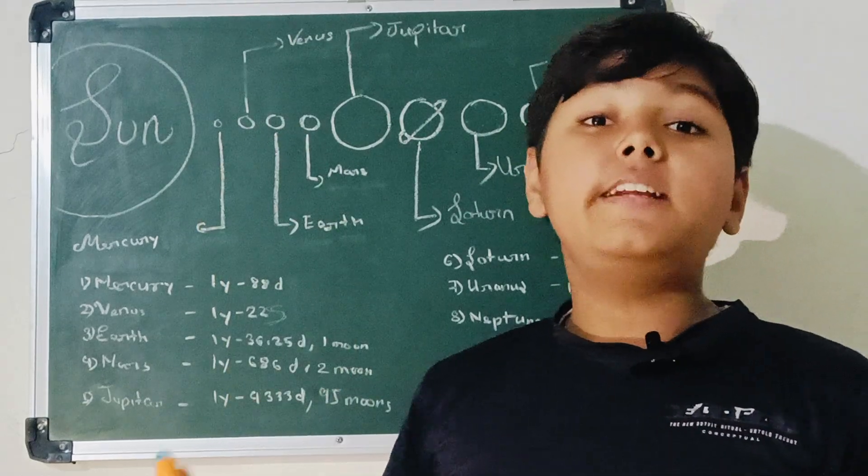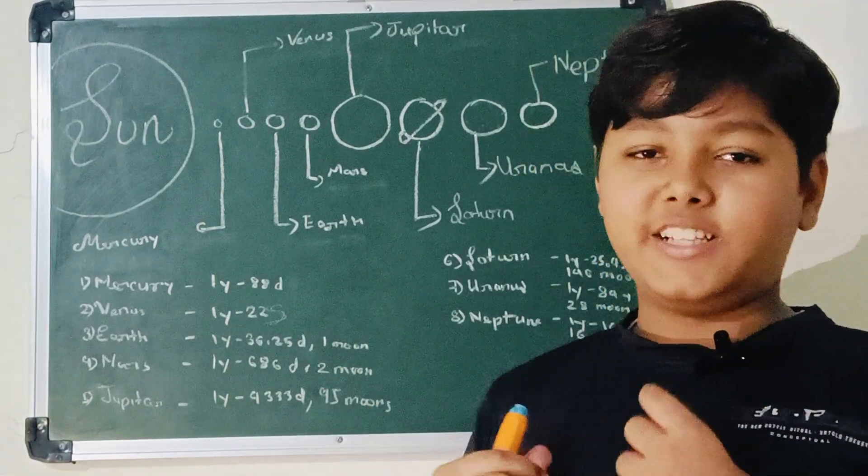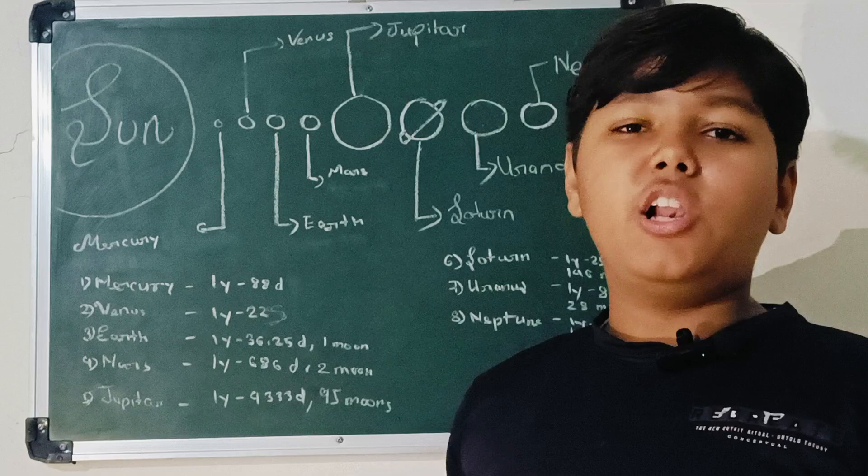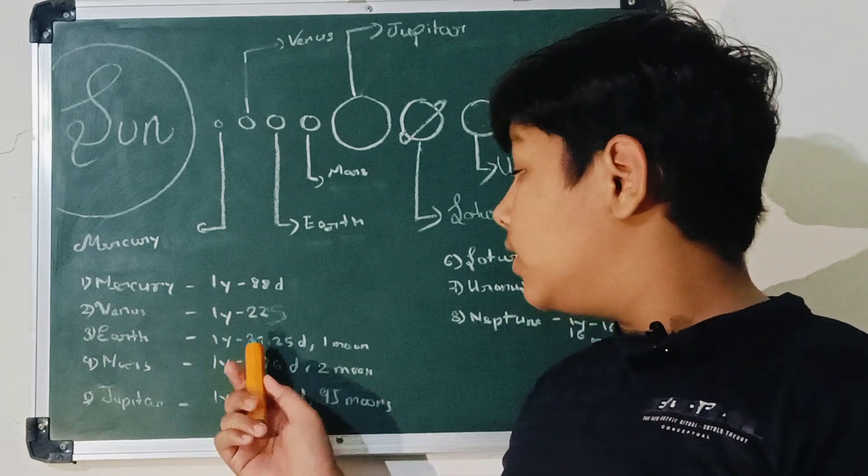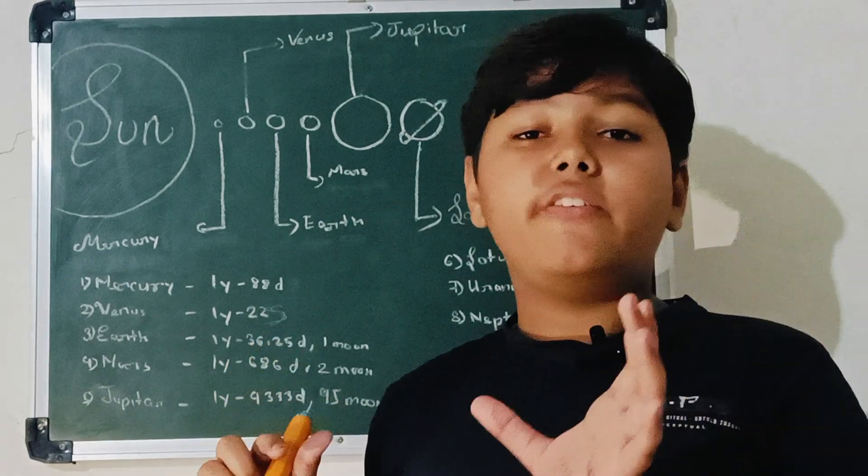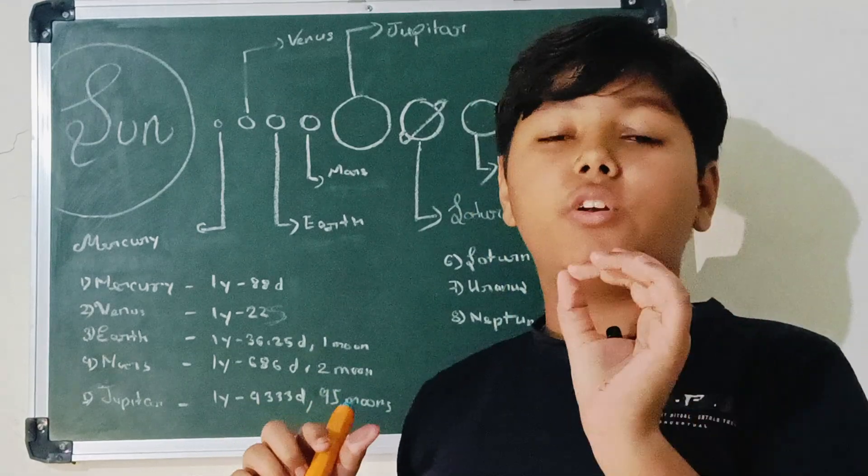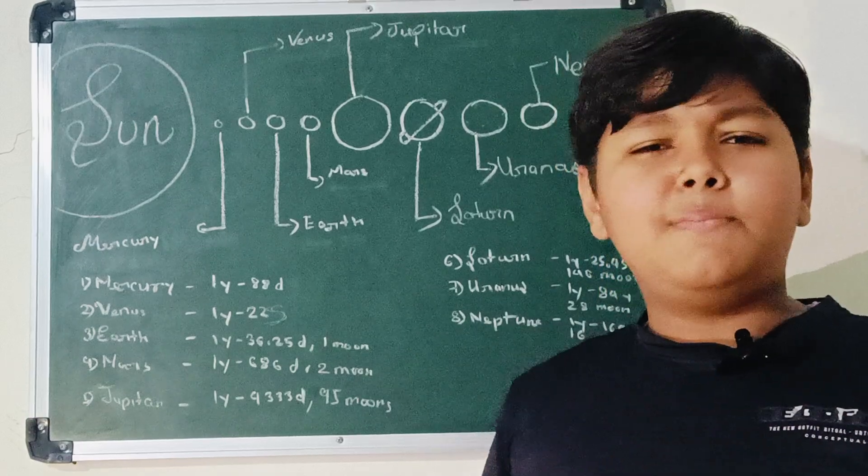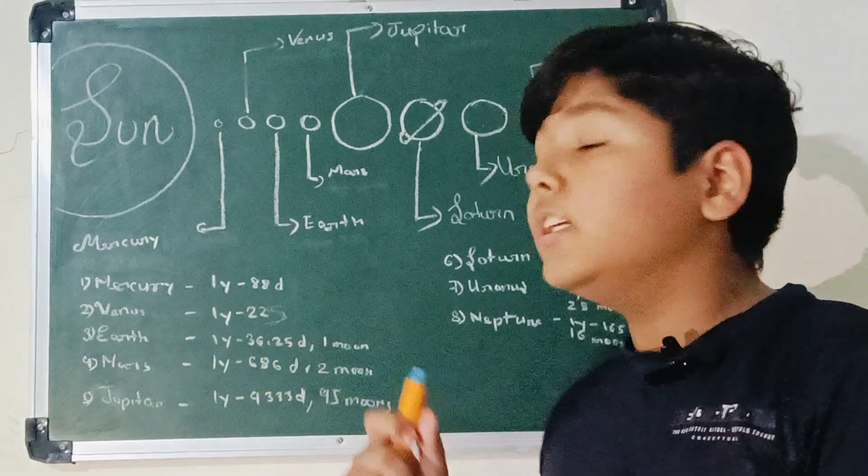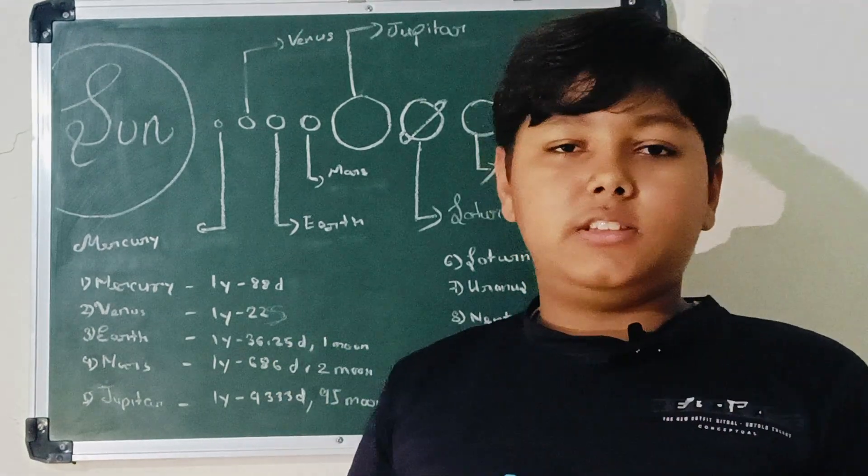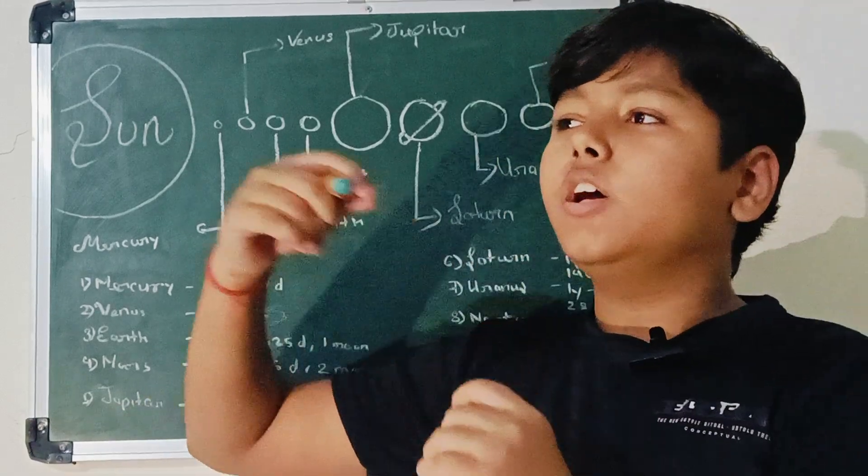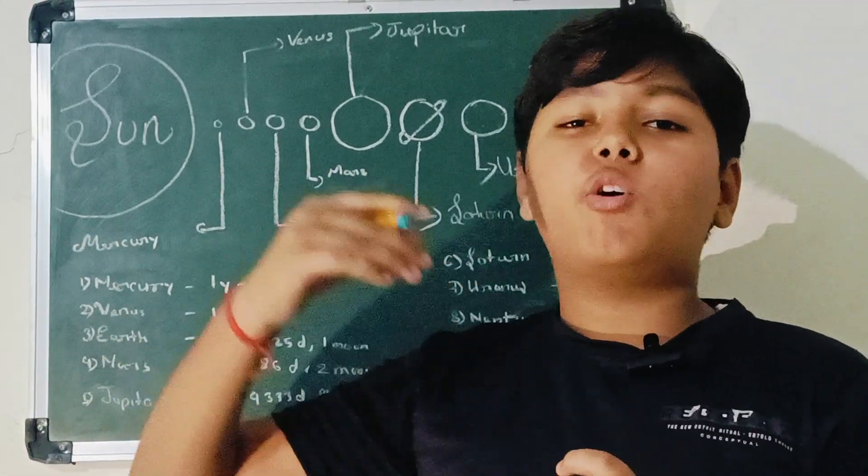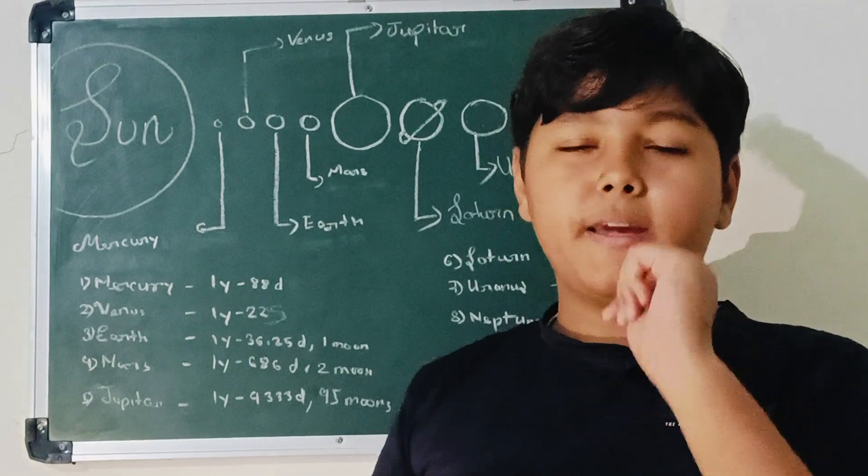Third planet, that is our home planet Earth. So as you all know, Earth has 365 days and 0.25 days extra with it. Do you know why leap year comes? Because of this 0.25 days. So when you count it, 0.25 four times, it makes 1.